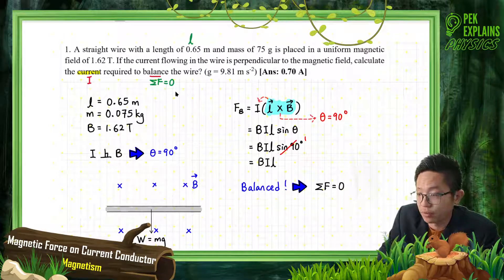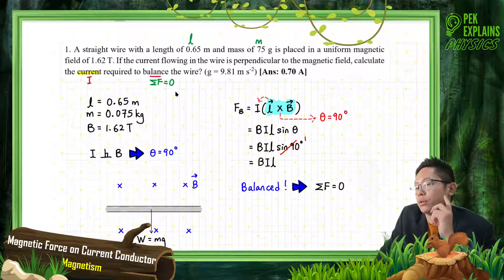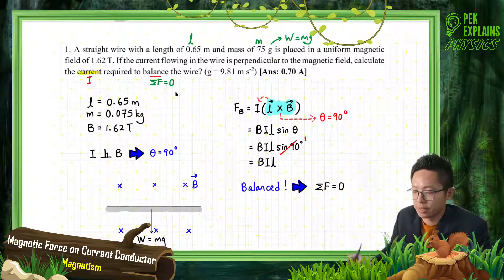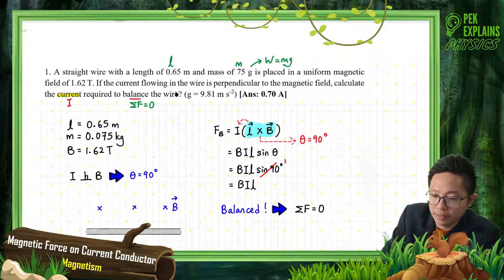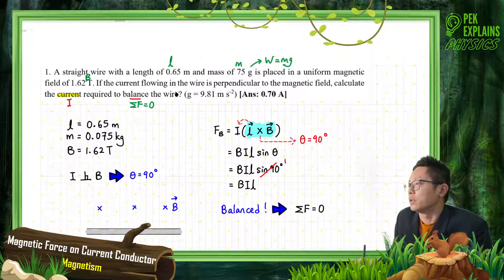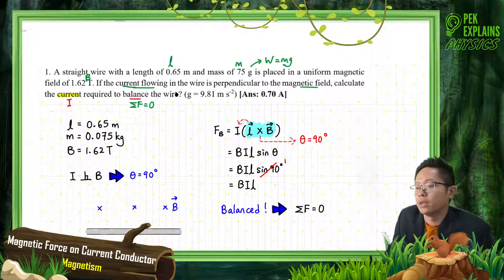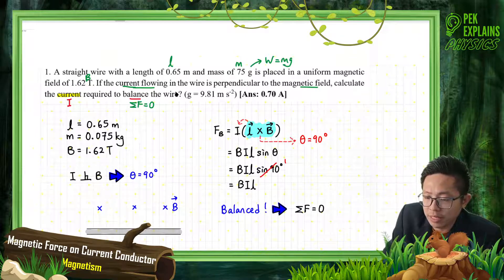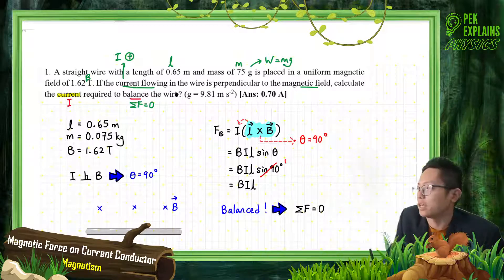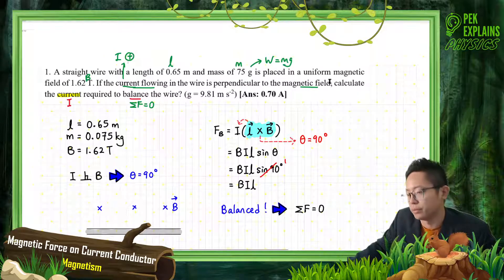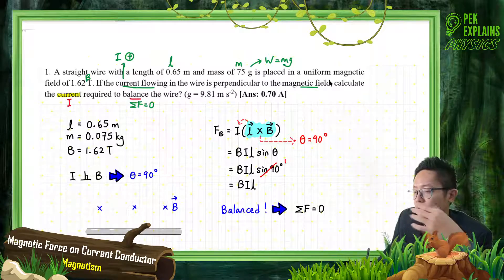It also gives us the length of the wire and the mass. This mass means it must have weight — weight equal to mg. And we have the magnetic field. Now, current flowing in the magnetic field means charge is flowing. Current is actually the flow of positive charge. So when charge flows in the magnetic field, you will have a force.